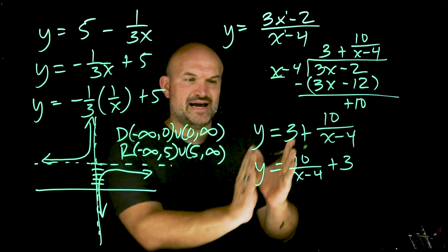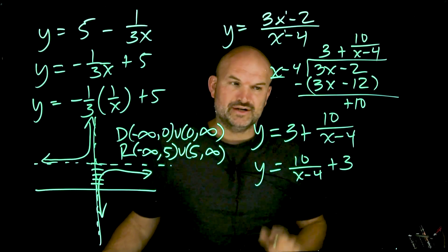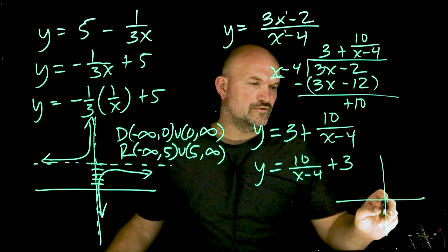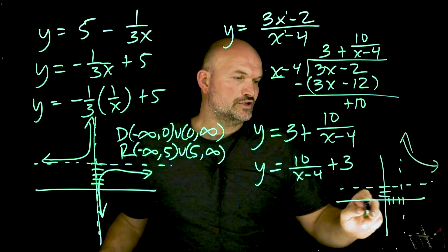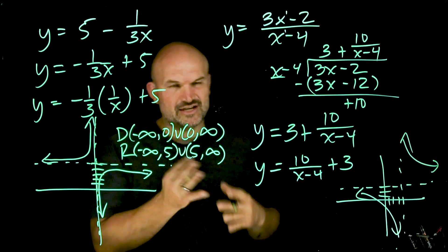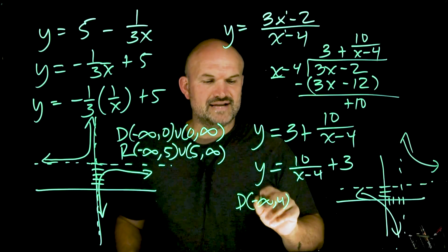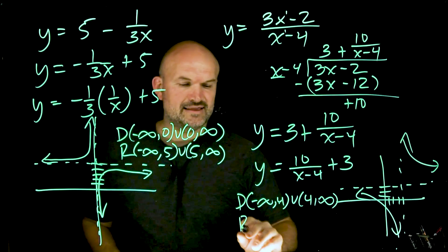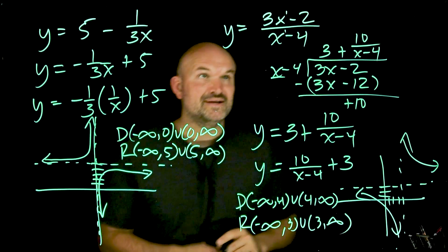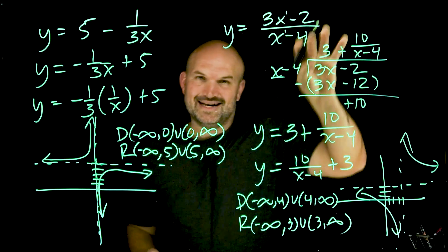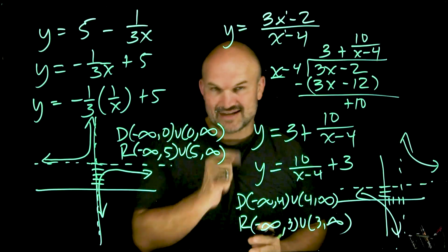Now we recognize a = 10 (vertical stretch), c = 4 (shift right 4), and d = 3 (shift up 3). The vertical asymptote is at x = 4 and the horizontal asymptote is at y = 3. Domain: (−∞, 4) ∪ (4, ∞). Range: (−∞, 3) ∪ (3, ∞). That covers the reciprocal function review — next we'll do a quick review of graphing rational functions.